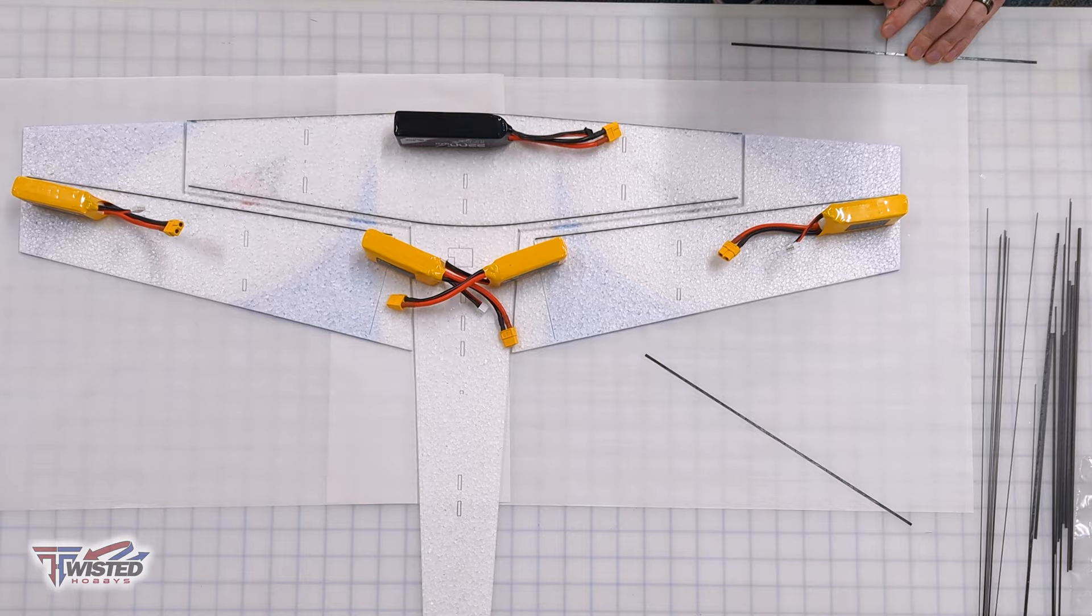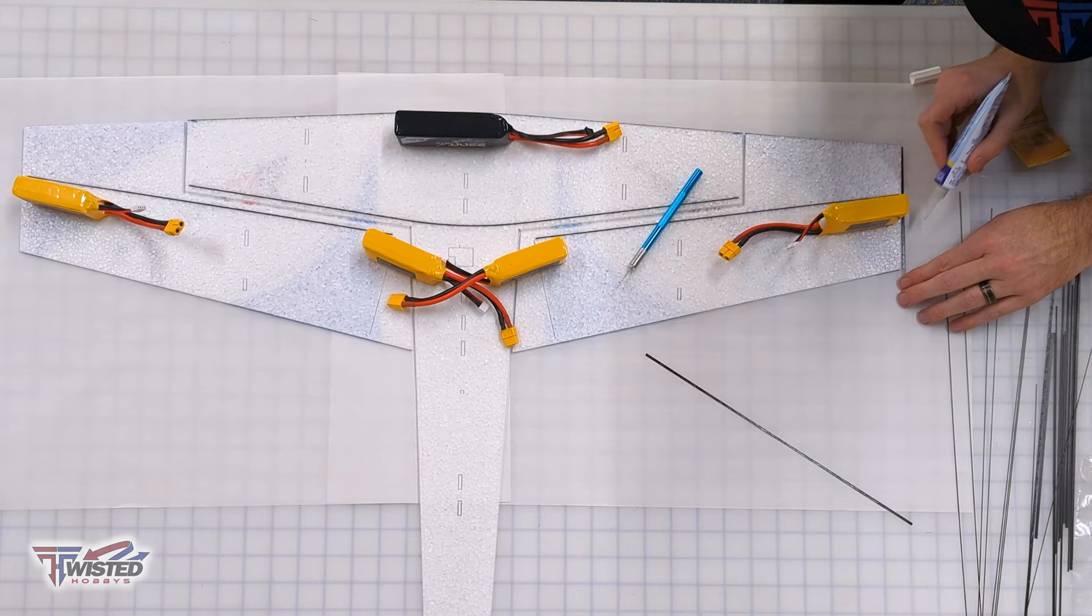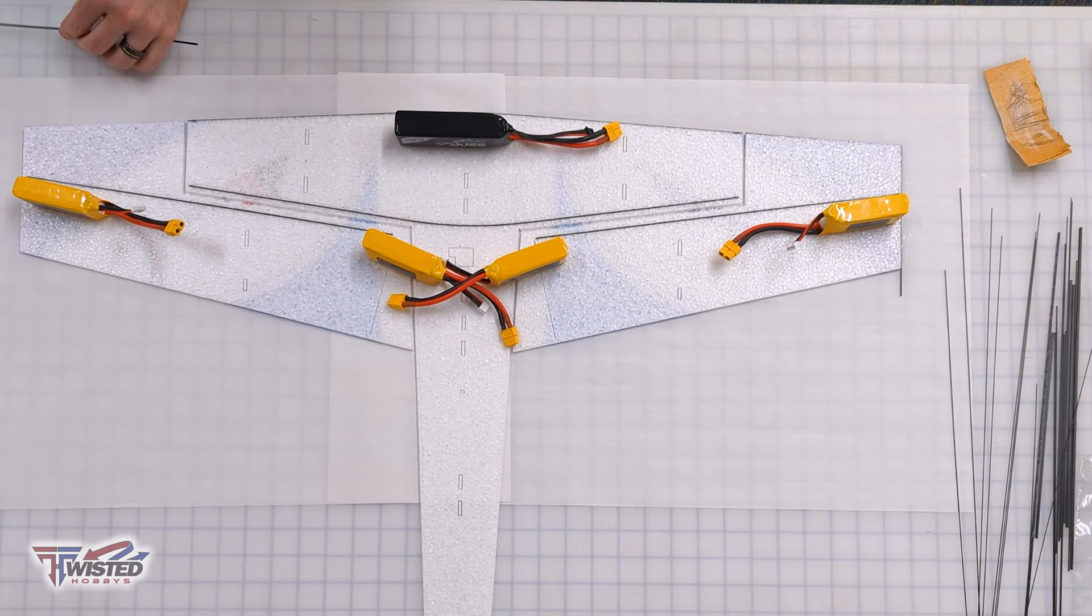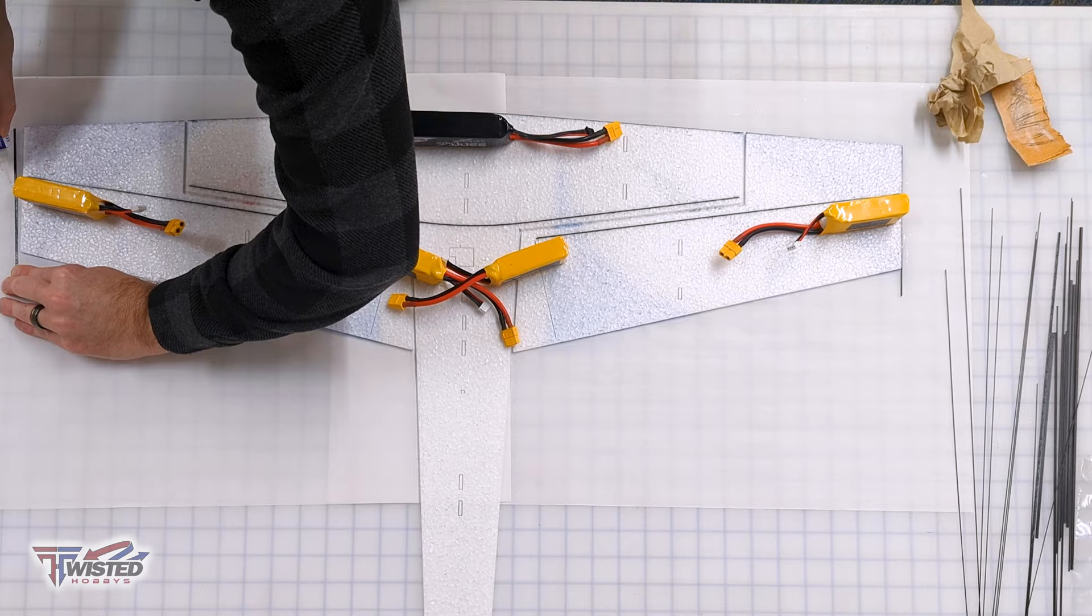Now we're working on the leading edge of the aileron and down the side. I marked it there and just broke it off, applied glue, and that went pretty straightforward. This video also applies to the Super Extra. The only real difference is that these bend all the way around instead of getting cut.